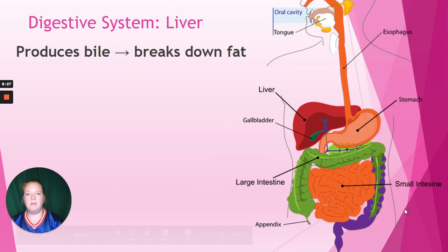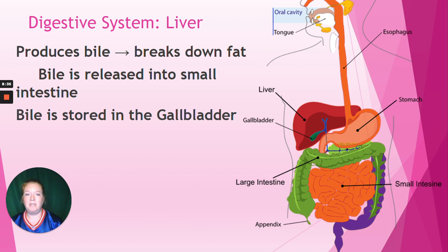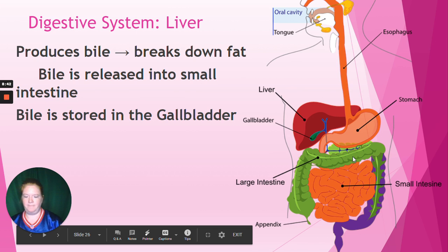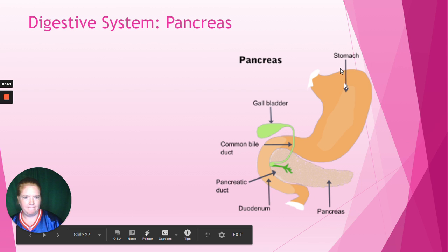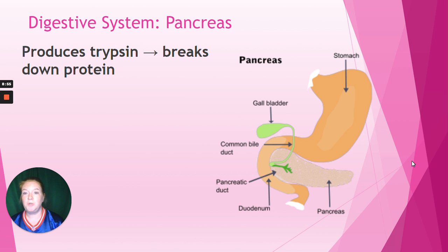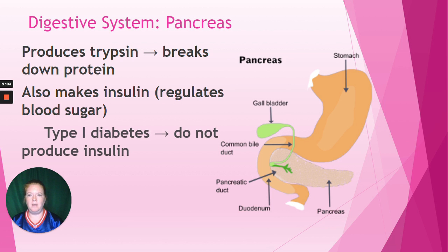The liver produces bile, which breaks down fat. Bile is released into the small intestine and stored in a little organ called the gallbladder. The pancreas, located very close by, produces trypsin, which breaks down protein. It also makes insulin, which regulates our blood sugar. In type 1 diabetes, you do not produce enough insulin.